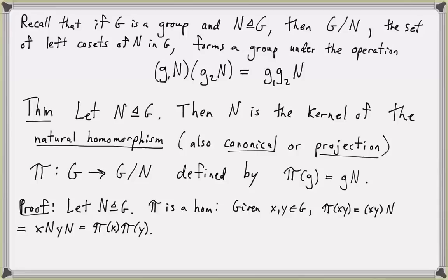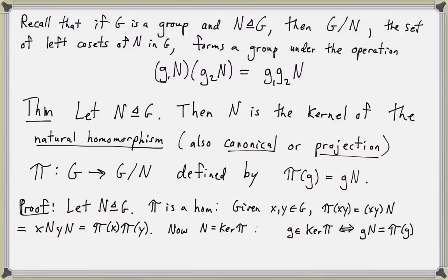Second, we show that N equals the kernel of this homomorphism. g is in the kernel of this homomorphism if and only if gN, which is pi of g, equals the identity in G mod N — and the identity in G mod N is just N. But gN equals N if and only if g is in the normal subgroup N, which we proved in our lesson on left cosets. So gN equals N precisely when g is an element of N, thus N equals the kernel of the natural homomorphism pi.